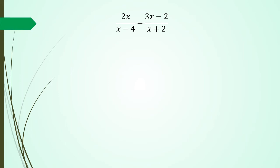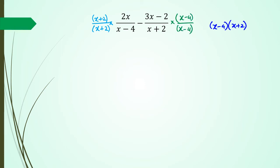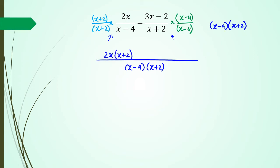Similar style. We've got 2x over (x minus 4) minus (3x minus 2) over (x plus 2). The lowest common multiple of x minus 4 and x plus 2 is going to be (x minus 4)(x plus 2). So for the first fraction, I'm going to multiply by x plus 2 in both numerator and denominator. For the second fraction, I'm going to multiply by x minus 4 in both numerator and denominator. The denominator becomes (x minus 4)(x plus 2), and in the numerator I've got 2x times (x plus 2) minus (3x minus 2) times (x minus 4).